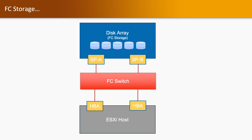FC storage — let's go through the basic architecture. We have a disk array where we have multiple disks with FC storage. That array is connected with the storage processor, and that storage processor is connected with the Fiber Channel switch. That Fiber Channel switch is connected to the HBA cards which are attached on the ESXi host. Using those HBA cards, ESXi gets the storage space from FC storage.